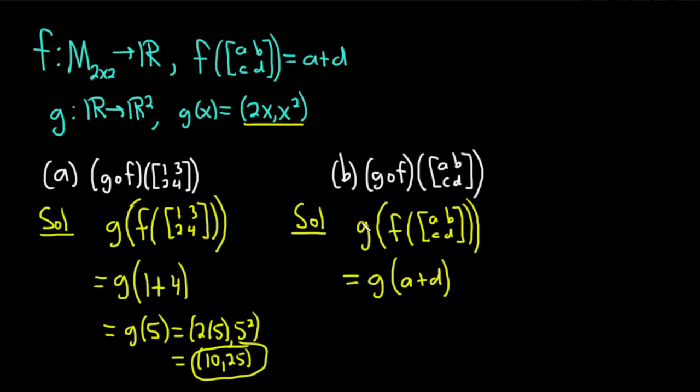And then now we just look at g. Here's g. It takes x to the ordered pair (2x, x squared). So this is going to be parentheses 2 times x, except our x is this whole thing here, so it'll be a plus d. And then (a plus d) squared, so (a plus d) quantity squared.